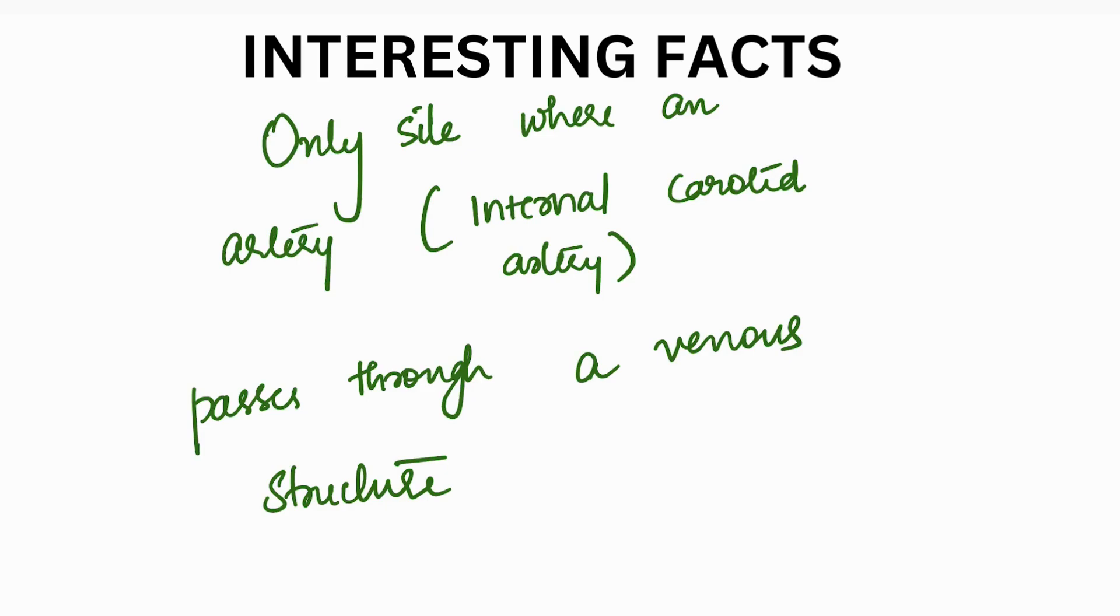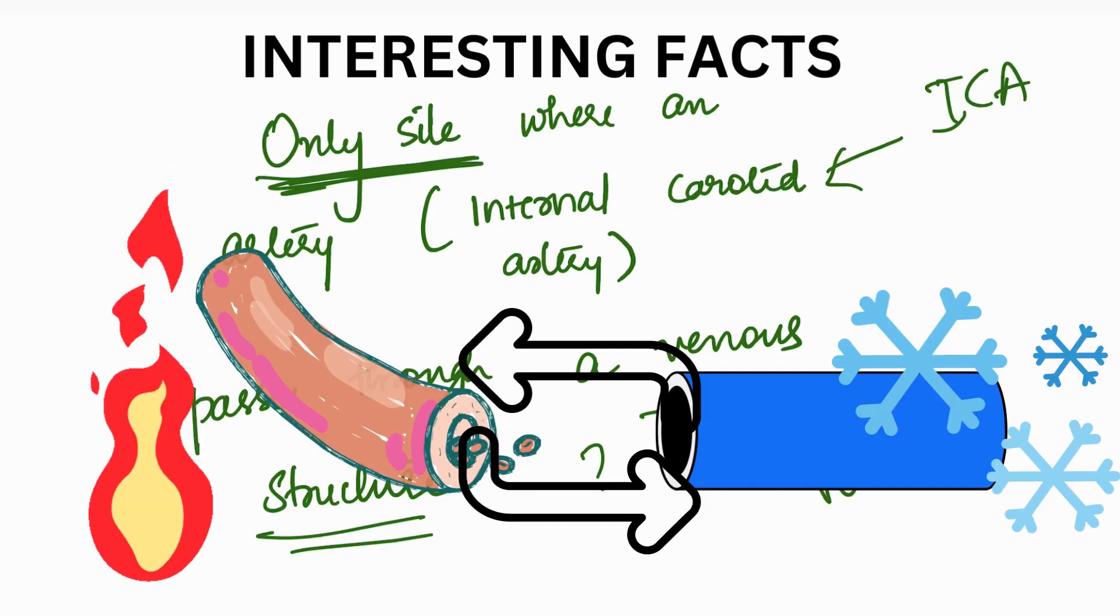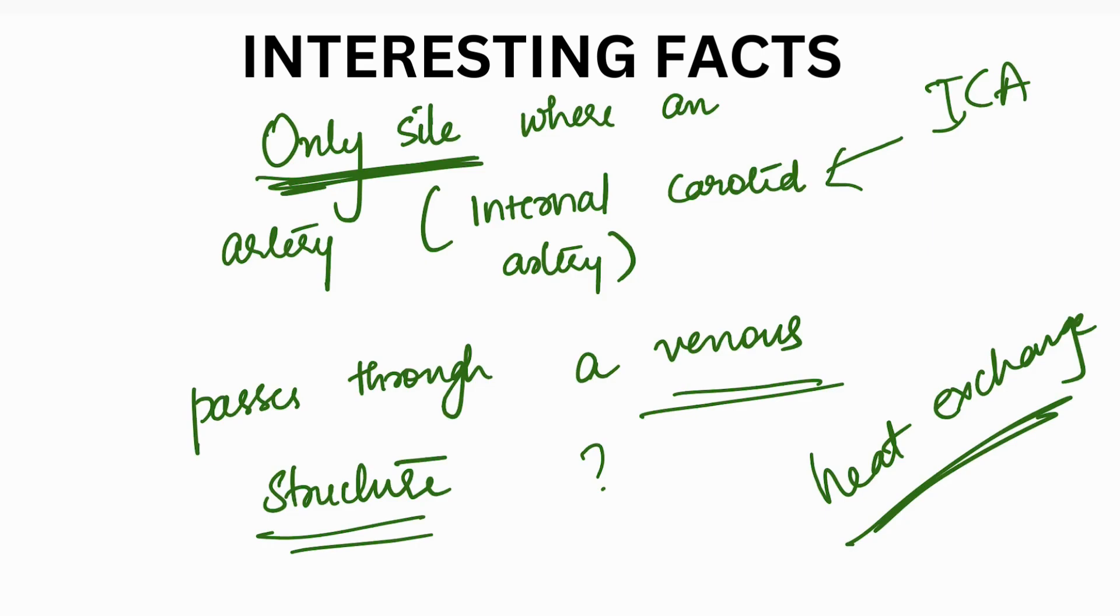One very interesting point that I want to tell you about is cavernous sinus is the only site where an artery, in this case it's the internal carotid artery, passes through a venous structure. Yes, we don't see that anywhere else. Now, why is this? It's because this is thought to allow for heat exchange between the warm arterial blood and the cooler venous circulation. This is just something interesting that I thought you should know. It's good for your general knowledge.